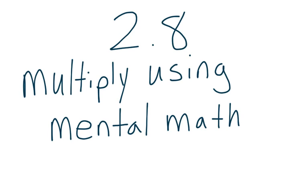In lesson 2.8, we're talking about multiplying using mental math. For these types of questions, we want to find the ice cream to the brownie or the peanut butter to the jelly. We want to find easy numbers that we can work with that are super friendly when we stick them together so we can answer these questions quickly.